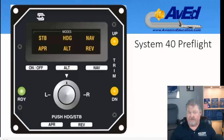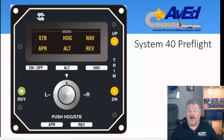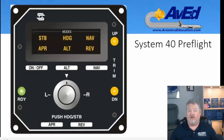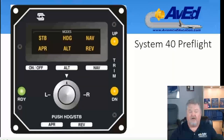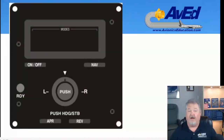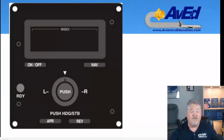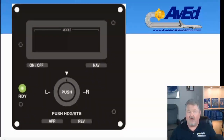If it has the altitude function built in, you'll also see the up and down trim indications come on. You'll then set the autopilot master switch to on — all annunciations will go out. As the gyros start spooling up and the system warms up, within three minutes you should see the green ready light come on, meaning the autopilot is ready to engage.